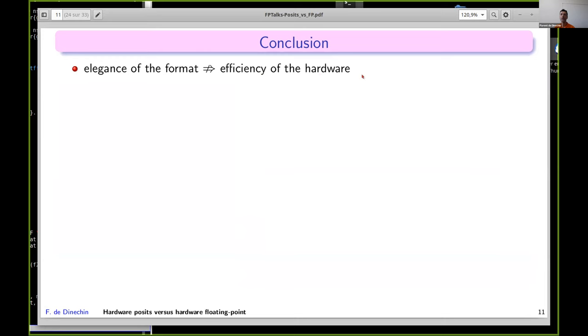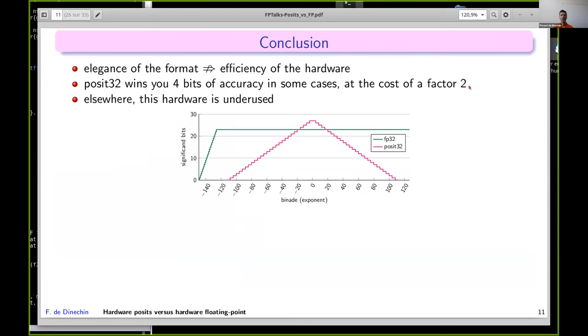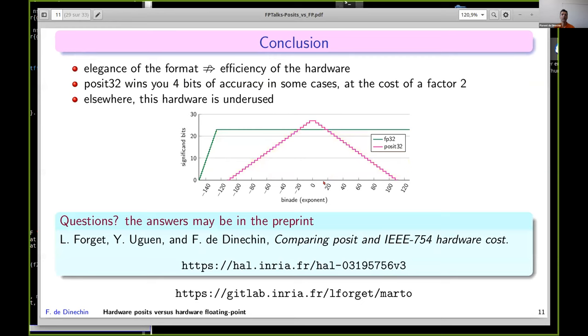That's my main conclusion: the elegance of the format doesn't imply that the hardware is efficient. Numerically, posit32 wins you four bits of accuracy out of 24 at the cost of a factor of two. It doesn't strike me as a very good trade-off, but transistors are cheap these days, so why not. What annoys me more is that elsewhere, outside of the golden zone, this extra hardware is mostly underused. That's the area of exponents where you actually fully use your multiplier in the posit multiplier, and that's the area where your IEEE multiplier is fully used. It doesn't strike me as very efficient use of the hardware, but that's politics. If you have other questions, the answers may be in the preprint.